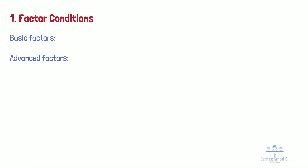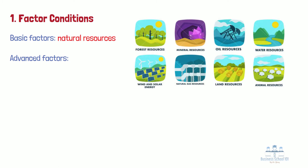Number one: factor conditions. Factor conditions refer to different types of resources that may or may not be present in the home country. They include basic factors and advanced factors. Basic factors include natural resources like climate, minerals, and oil, where the mobility of the factors is low. For example, with the second largest proven oil reserves in the world, Saudi Arabia is one of the largest exporters of oil worldwide. However, Porter indicates that although basic factors may create the ground for international competitiveness, they can never turn into real value creation without the advanced factors.